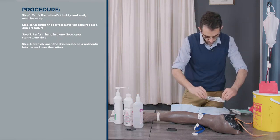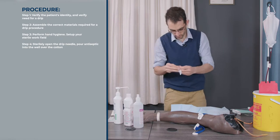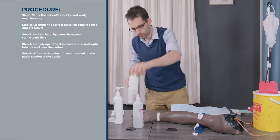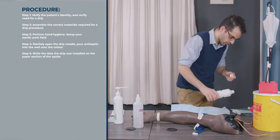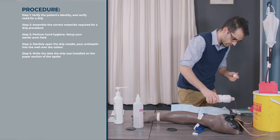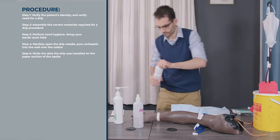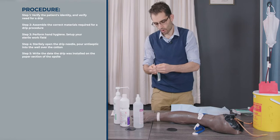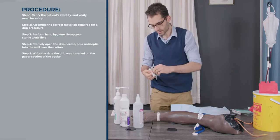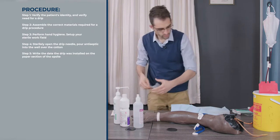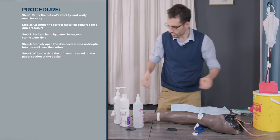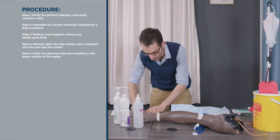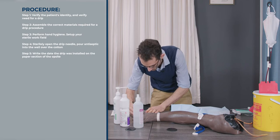Then you can open up your drip needle. Pour your antiseptic into the well over your cotton. What you can then do is open up your op site. When you open your op site, you need to take your pen and write the date that you're putting up the drip. I'll explain why we do that in this order.